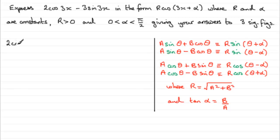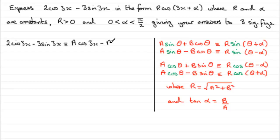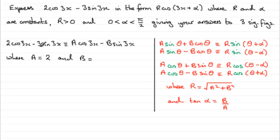In the example we've got here, 2cos3x minus 3sin3x is identical to the form a cosθ minus b sinθ, only the θ is 3x. So this is identical to a cos3x minus b sin3x. You can see that a corresponds to 2. And the b value — you've got to be careful here — b is 3, not minus 3. The minus is taken care of in the identity, so the b value is just 3.